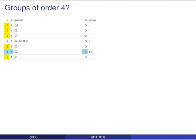Now let's see what this can do for us. Zooming in on the table from the beginning, we see that for order 4, there are only two groups, both abelian: C4 and C2×C2. In our notation, we would call these Z4 and Z2 ⊕ Z2.